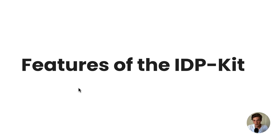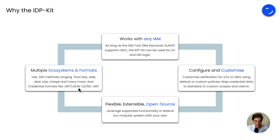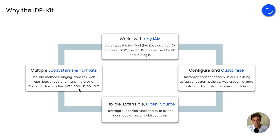Now that you've seen how it actually looks in reality, let's go over why you would use the IDP kit for a decentralized identity provider. First, it works with any IAM tool — as long as the identity access management tool like Keycloak or Auth0 is built on top of OIDC, the IDP kit can be used for VC and DID login. Because the IDP kit is built on top of our current infrastructure — the SSI kit — it also comes with all the features the SSI kit offers: a wide range of DID methods including did:key, did:web, did:cheqd, did:iota, and many more, as well as different credential formats like JSON web tokens, JSON-LD, and SD-JWT.